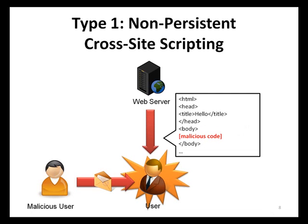After the attack is completed, the reflected malicious code does not stay resident on the web server, which is why this type is called non-persistent cross-site scripting. The user had to first be coerced into clicking the suspect link. Many development teams disregard this type of attack claiming users would not do that. However, there is a demonstrated and ever-growing trend of unsuspecting users clicking on malicious links. Links like these may raise suspicion for tech-savvy individuals like developers and security professionals, but for everyone else they probably would not raise suspicion and would more than likely be clicked.